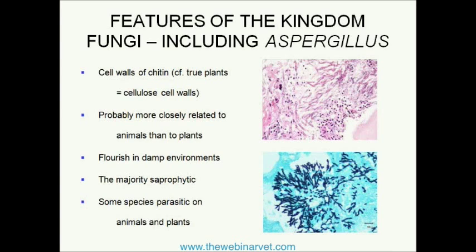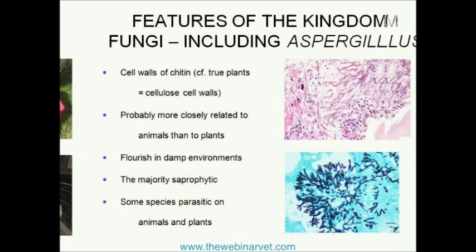The other bullet points speak for themselves. Like all fungi, Aspergillus species flourish in damp environments. The majority are saprophytic, not parasitic, but Aspergillus is essentially an opportunist, and some species are parasitic. They not only flourish in damp environments but can survive and do very well under conditions where osmotic pressure is very high — for example, in sugar-rich areas. And they need oxygen — they are aerobic.